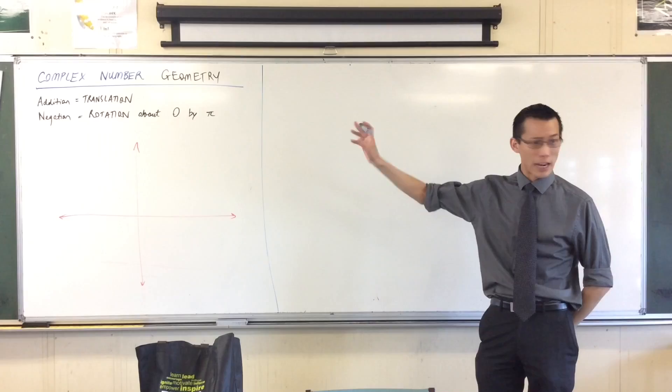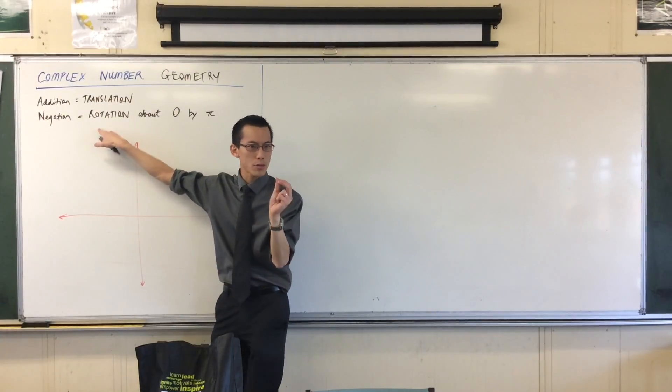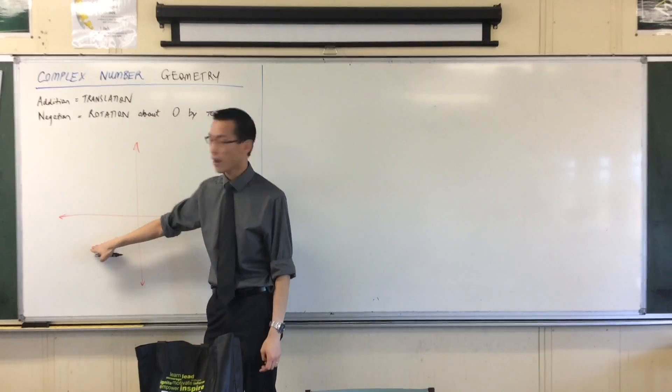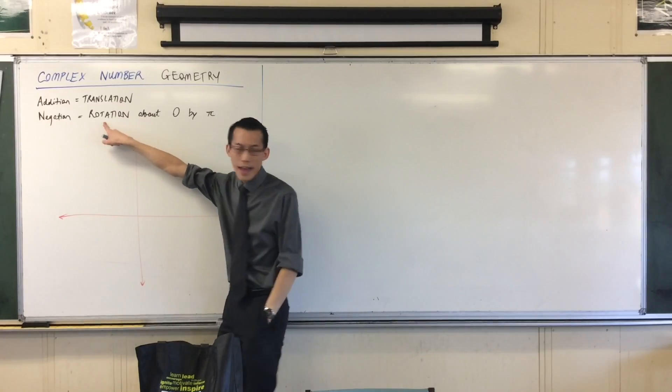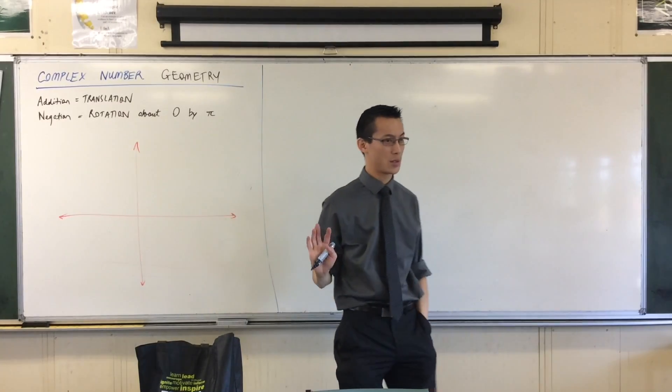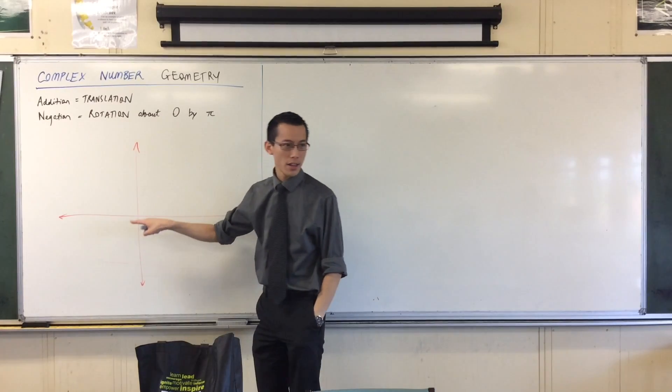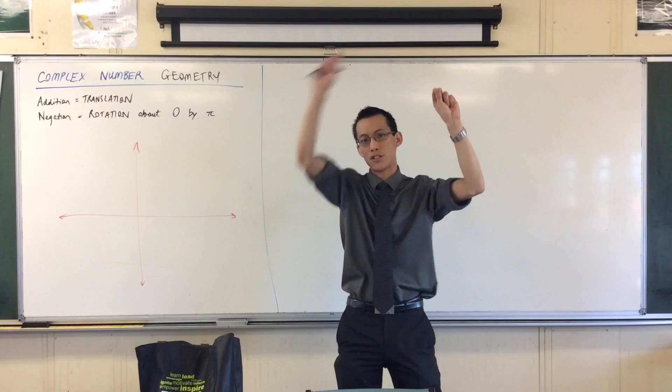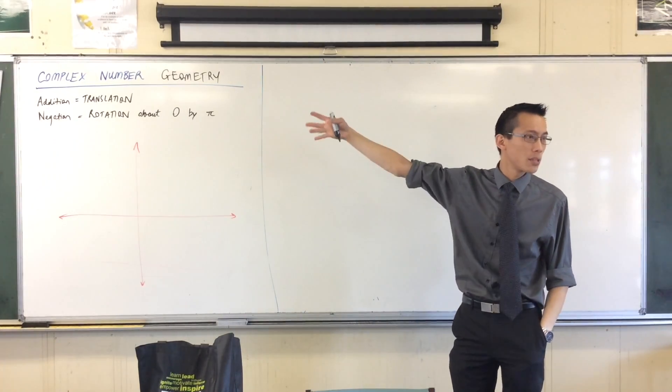We looked at negation. What happens when you slap a minus sign on the front of a complex number? We concluded you can think of it either as reflection, like you reflect across this way, or alternatively, what I suggest is a better way to think about it, and the reason will become clear in the next 10 minutes or so, is that negation really means you rotate it around the origin by pi radians. That's what gets you from the first quadrant around to the third. Now addition, negation, which gave us subtraction. What operation is next?